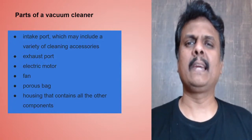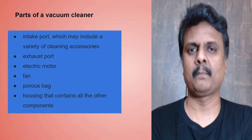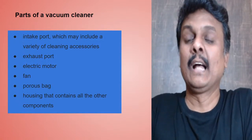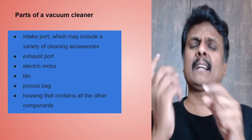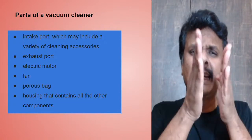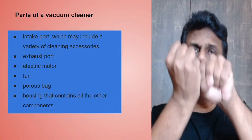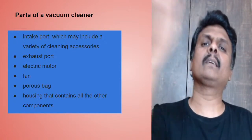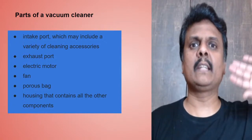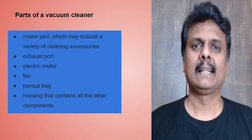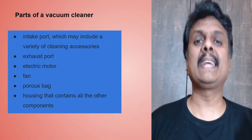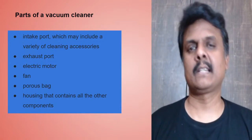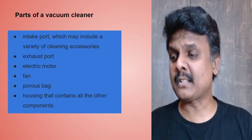Now coming to the parts of a vacuum cleaner. There is an intake port — different accessories like a brush or a narrowed hollow stick — as intake port. Through the intake port, the suction, air, and dust everything goes inside. The exhaust port is where the air is sent out. The motor creates the force making the fan rotate. There is also a porous bag for the collection of dust particles. Those are the parts of a vacuum cleaner.